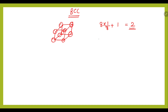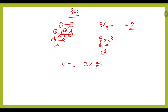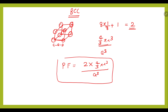Since atoms are treated as hard spheres, the volume of each sphere is (4/3)πr³. The unit cell is a cube with dimension a, so the volume of the unit cell is a³. Substituting into the packing factor formula gives: 2 × (4/3)πr³ divided by a³.